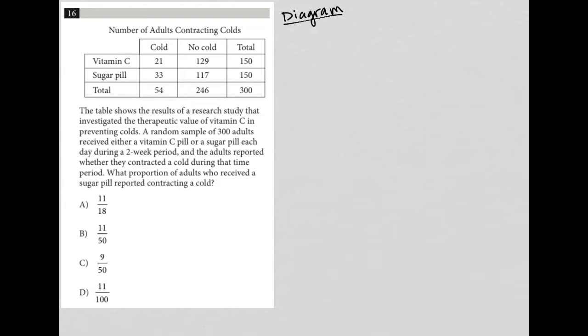So what we have here is a table. The title of this table is number of adults contracting colds. And then it looks like we have vitamin C, sugar pill, and then whether you get a cold or you do not get a cold. And then of course we have our totals across the bottom here, as well as totals across this last column.